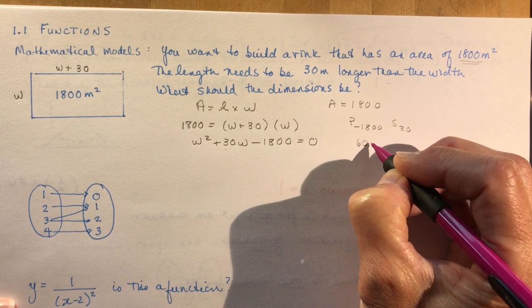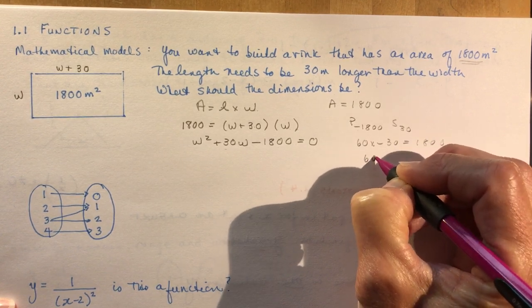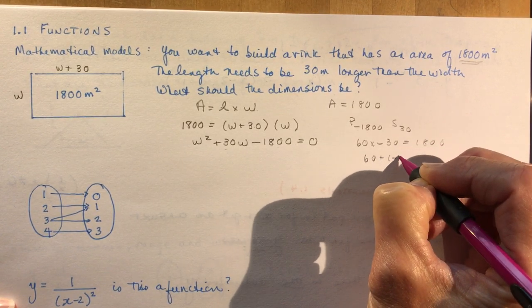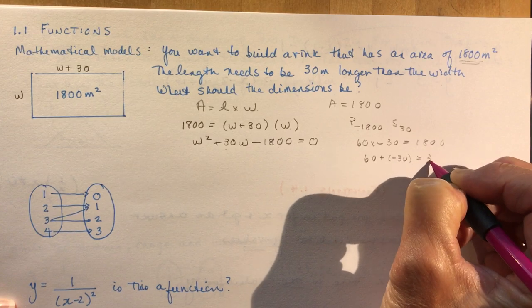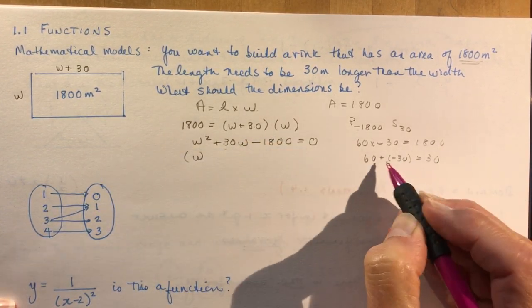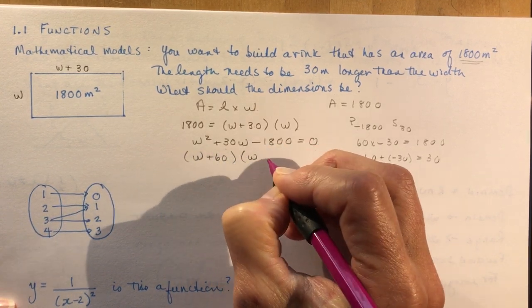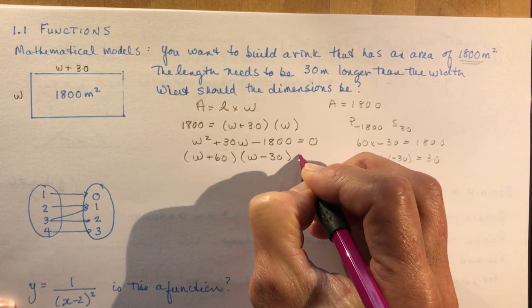It happens to be 60 and minus 30. So 60 times minus 30 is negative 1800 and 60 plus a minus 30 is 30. So those are my two magic numbers. So this becomes w plus 60 and w minus 30 equals zero.